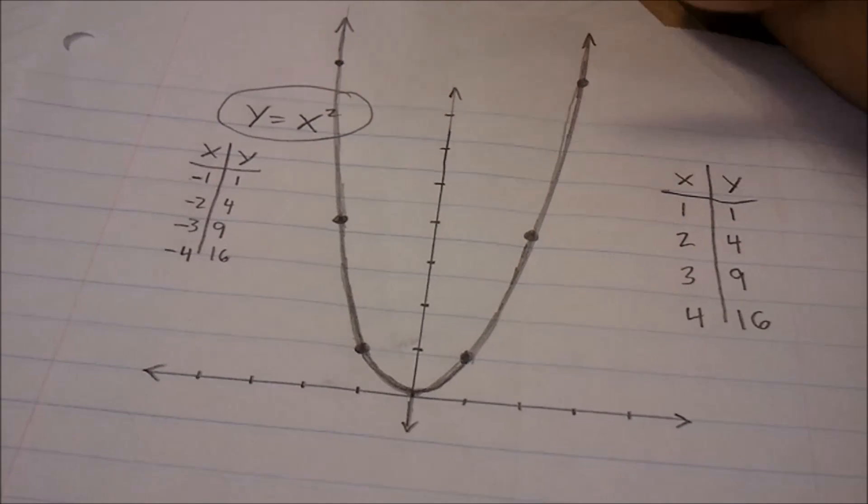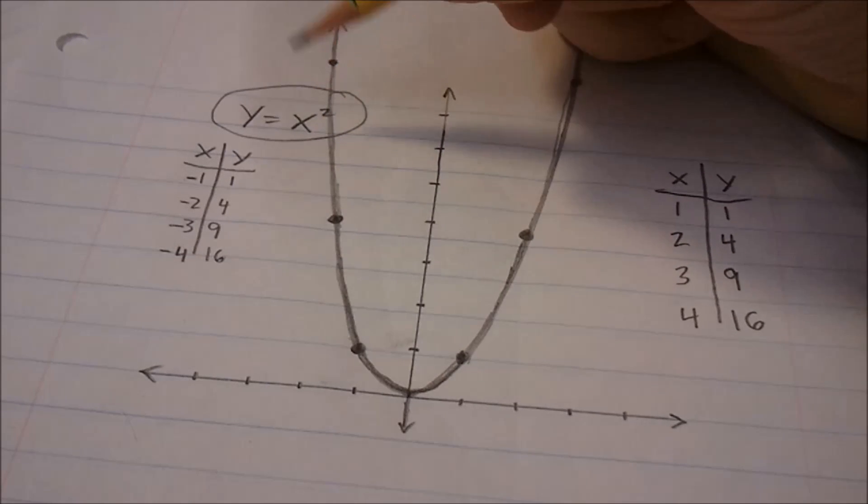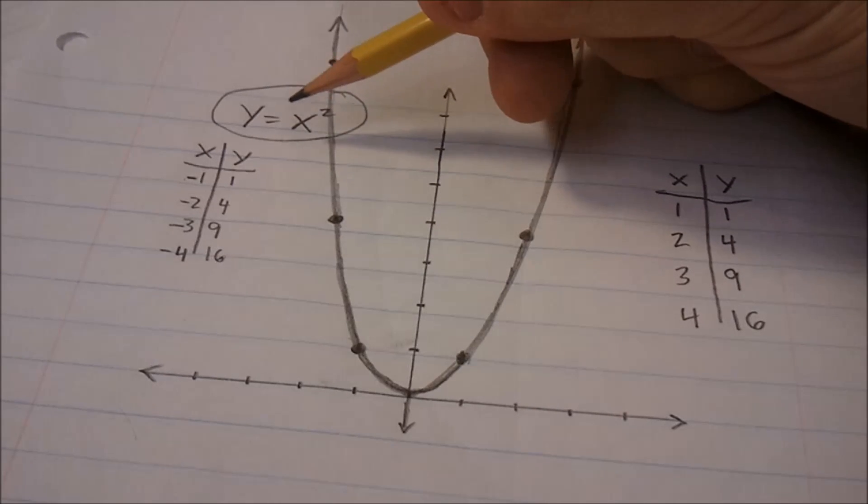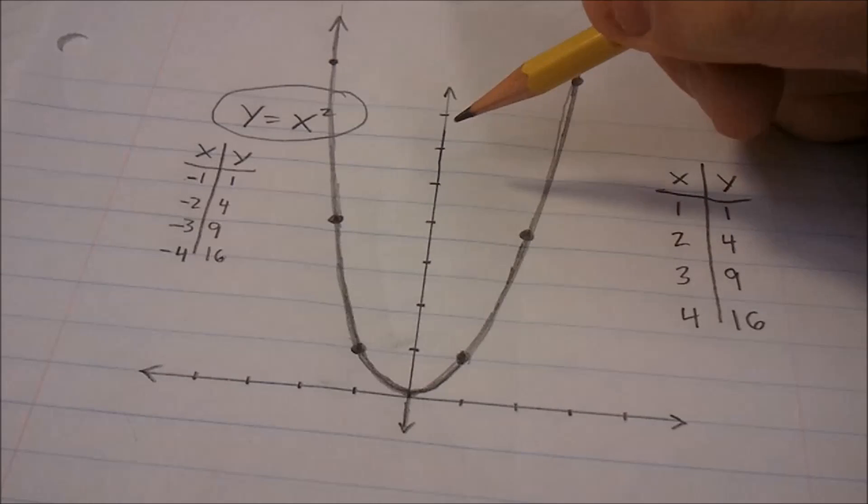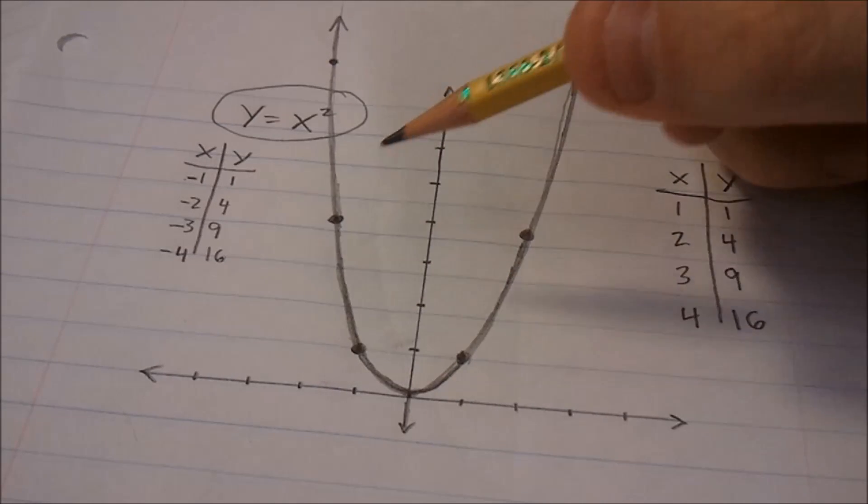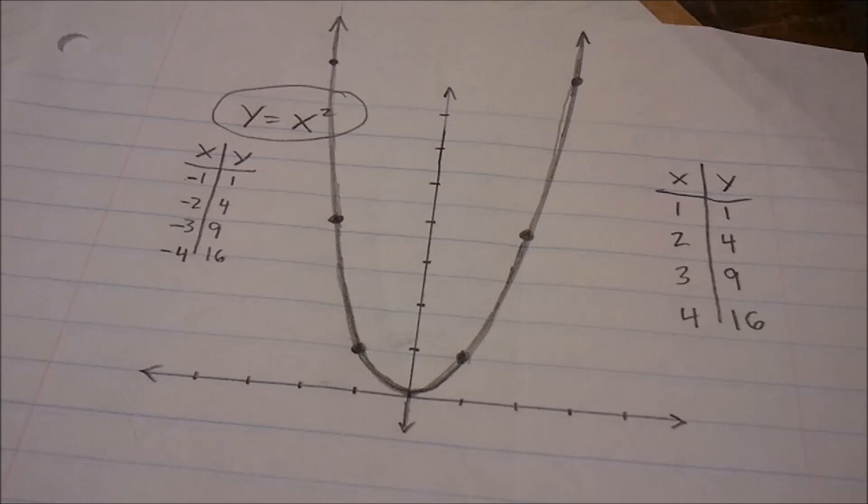And in order to see what this looks like on a graph, we just substitute values in for x. If x equals 1, x squared is still 1, so y equals 1. And if x equals 2, x squared equals 4, so y equals 4. And then we just plot these points. And we do it for negatives also. And graphing a parabola is that simple.